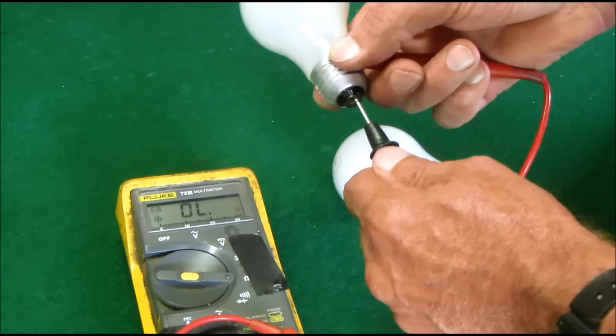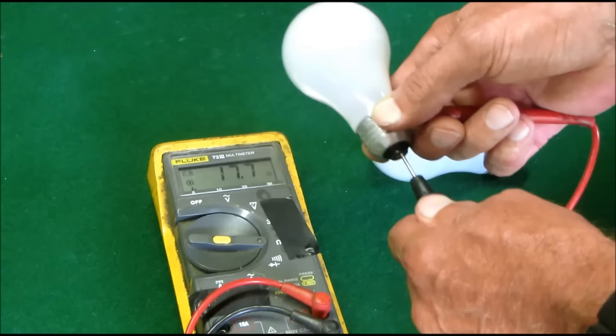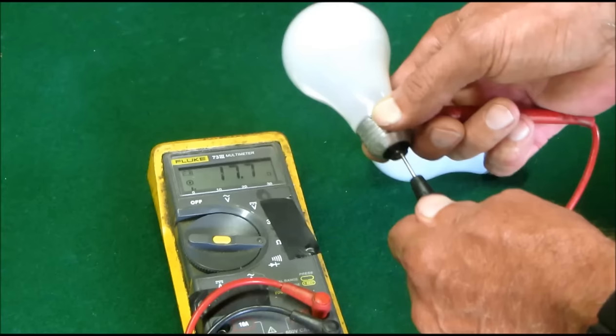This light bulb is bad, and as you can see, this light bulb has got 18.2 ohms, 17.9 ohms. This is a good light bulb, and that's how you'd use an ohmmeter to check a common household incandescent light bulb.